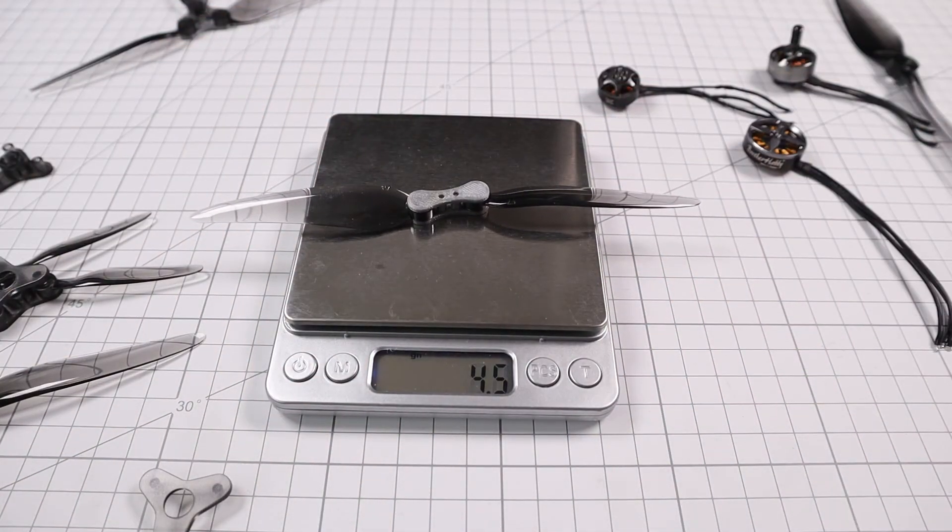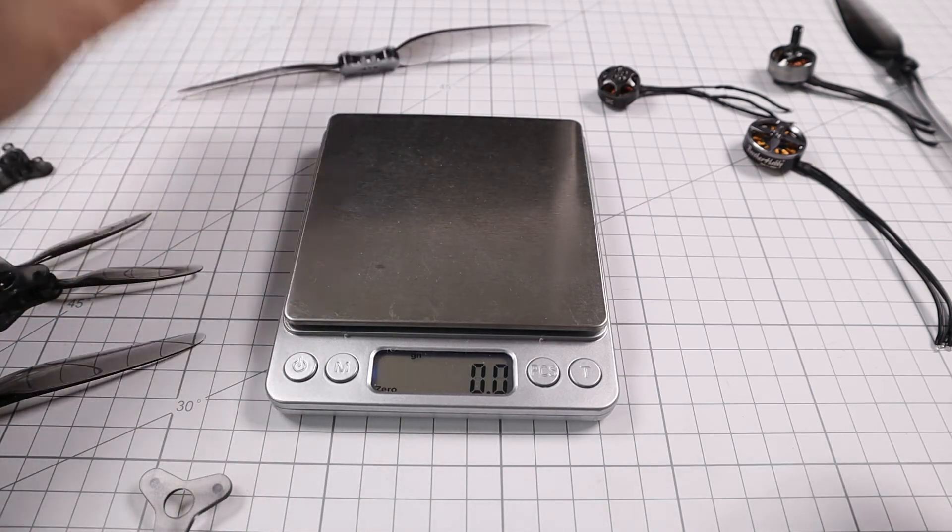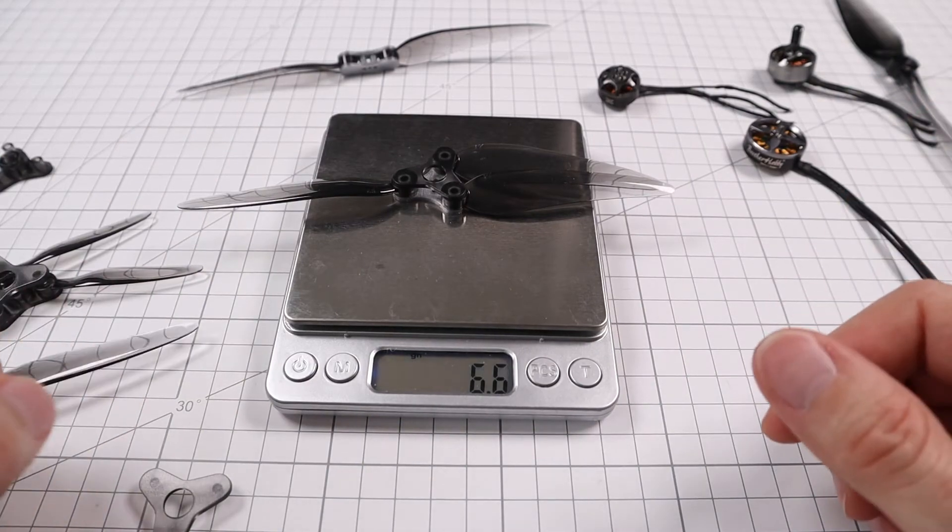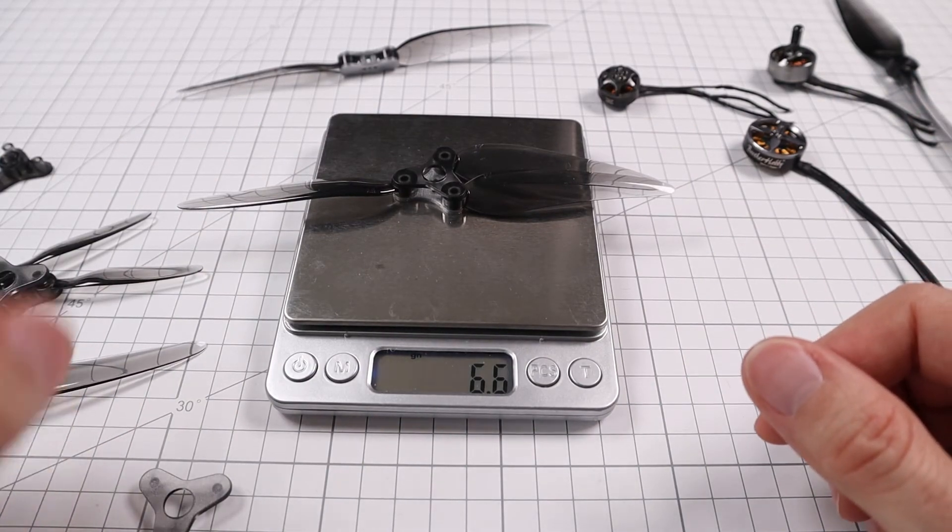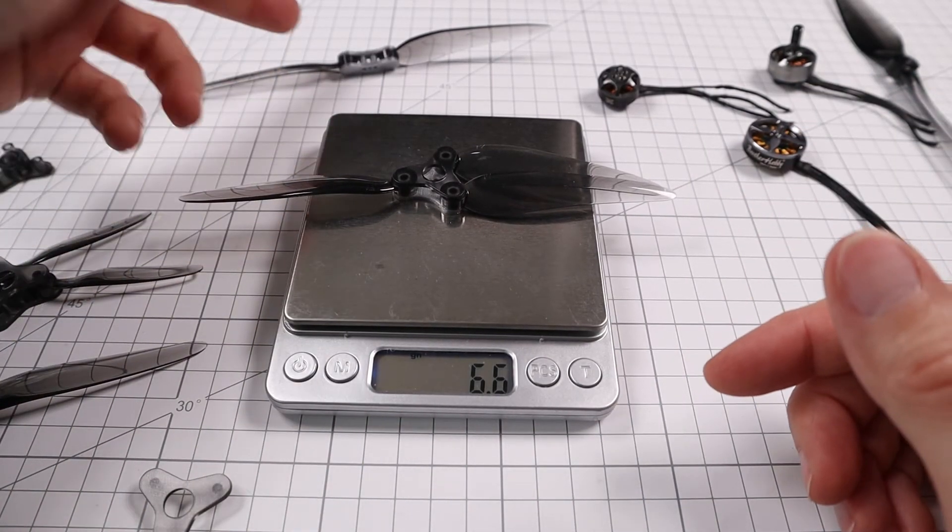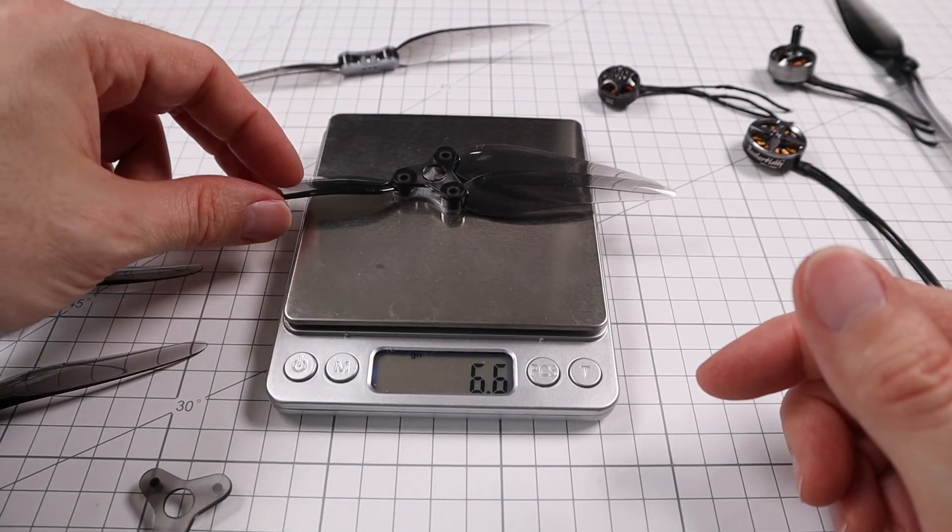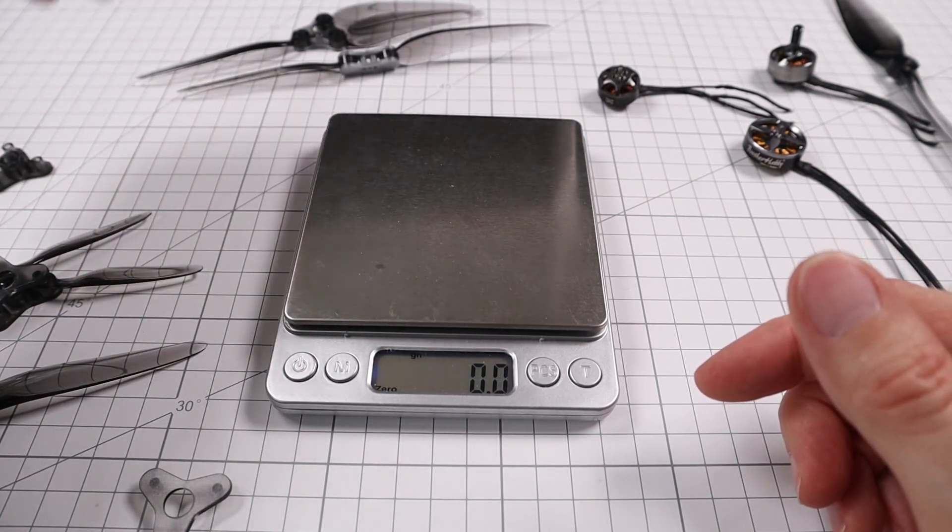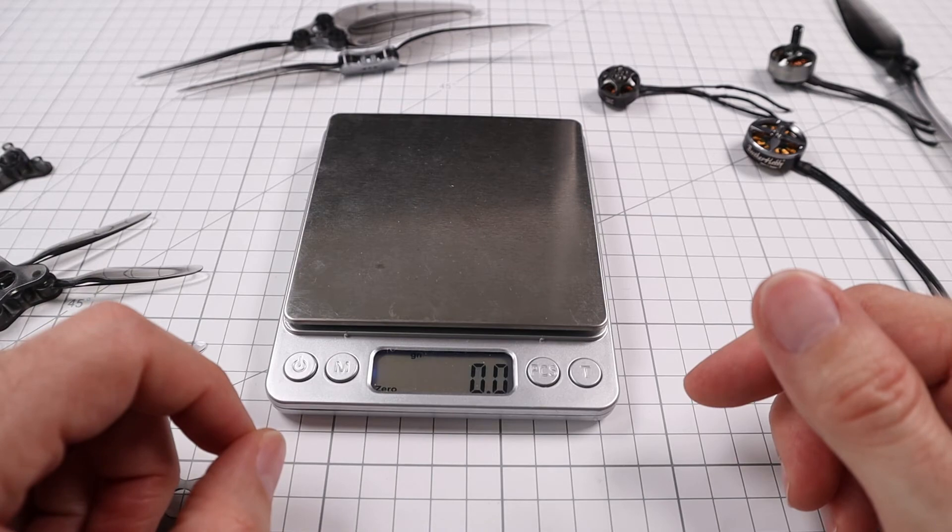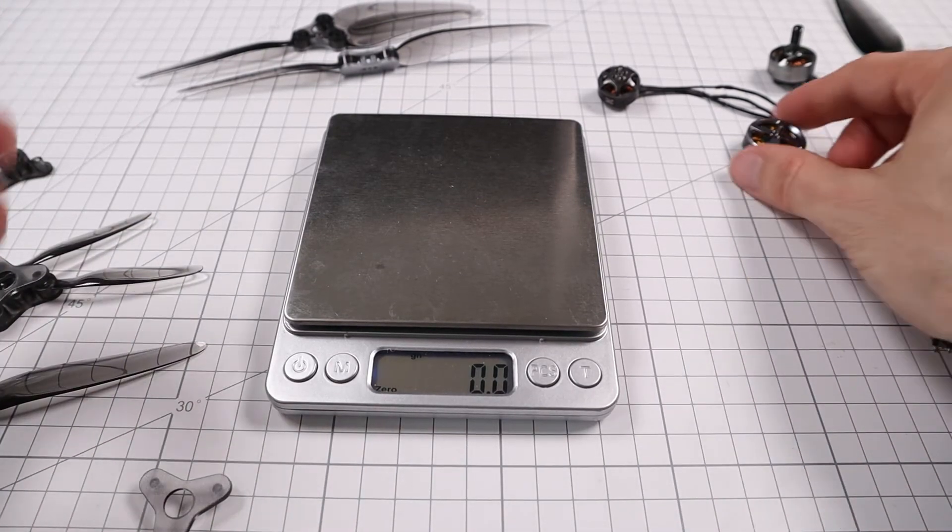If we weigh this, the two-blade version is at 4.5 grams, three-blade version as it is from stock from Dalprop in this case, 6.6 grams. So it's no rocket science, if there's one blade less then that's close to one third less of the total weight.